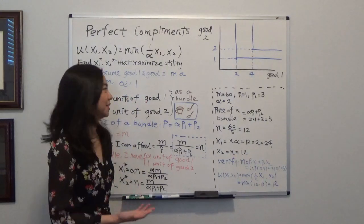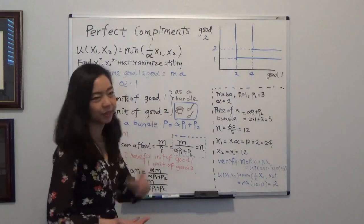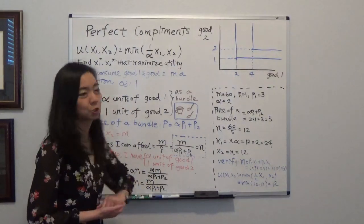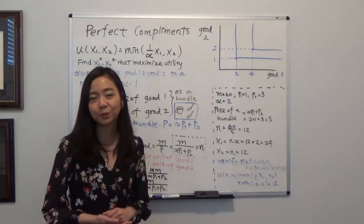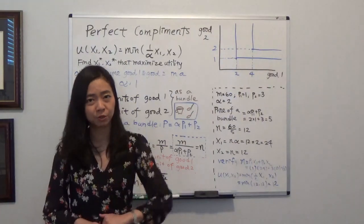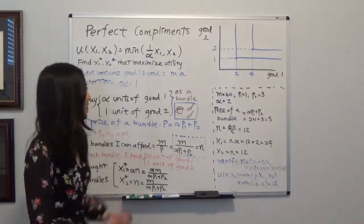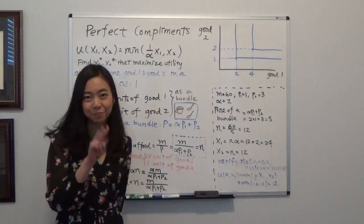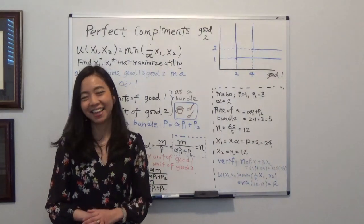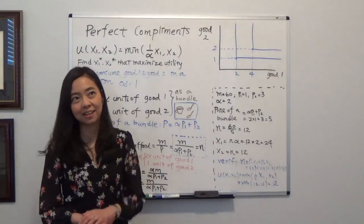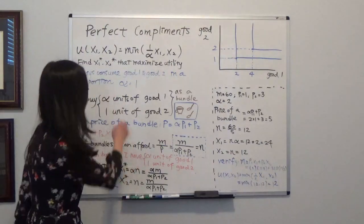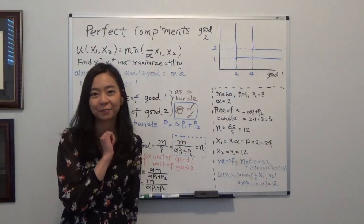You can imagine that good two is cups of coffee and good one is spoons of sugar. So suppose you always consume a cup of coffee with two spoons of sugar, then your alpha will be equal to two. But if today you have a sweet tooth and you add five spoons of sugar into your coffee, then your alpha will be equal to five.